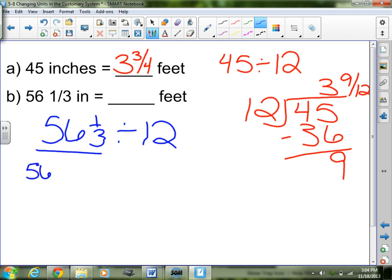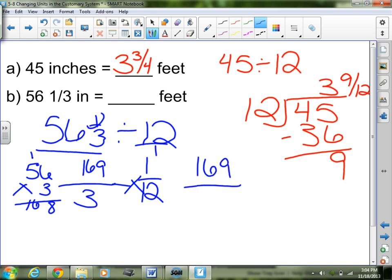56 times 3. 3 times 6 is 18. 3 times 5 is 15. Plus 1 is 16. Plus the 1. So I have 169 over 3. And I'm going to change it already. 12 times 1 over 12, because I took the reciprocal of 12 over 1. 169 times 1 is 169. 3 times 12 is 36. Now I'm ready to simplify.